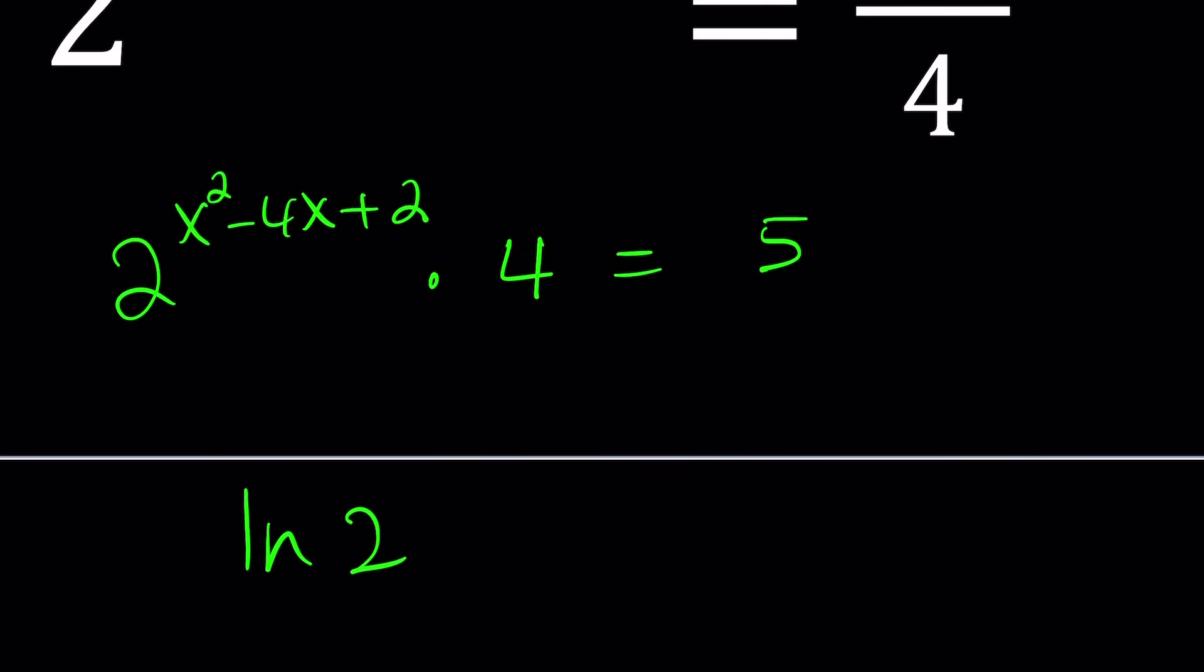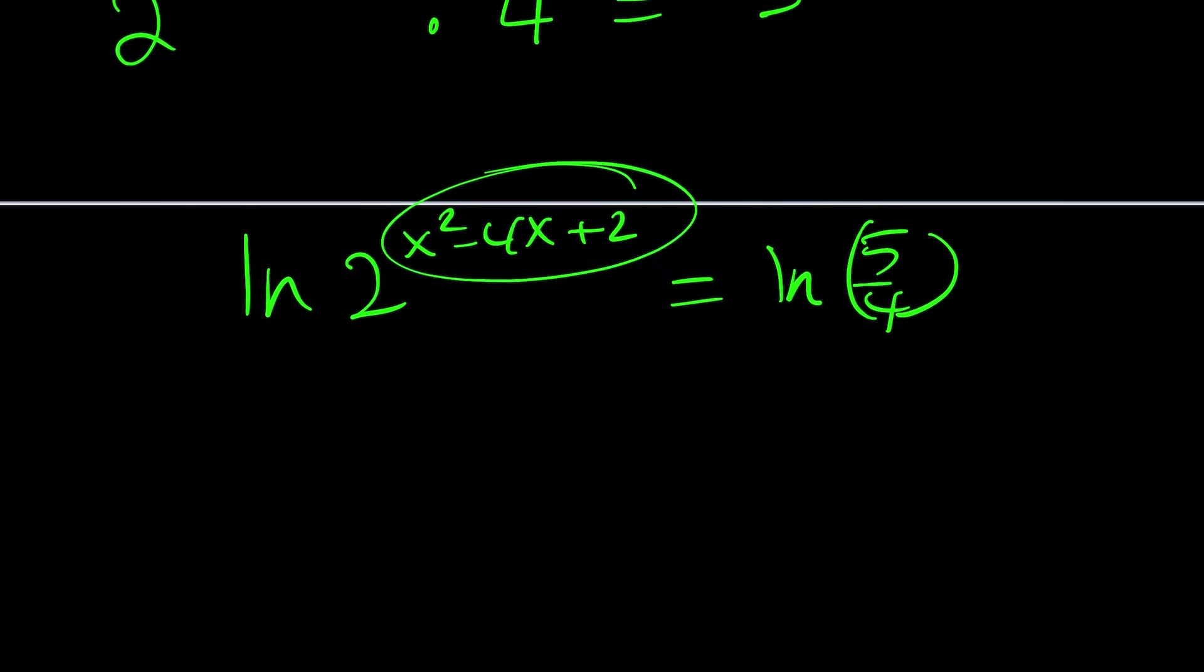If you ln both sides, you get rid of the exponent, right? I mean, you can bring it down. When you bring it down, though, that's a quadratic term. So you multiply that by ln two, and then set equal to ln five fourths. Now,